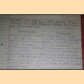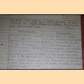Prokaryotes have a chemically complex cell wall. Eukaryotes may also have a cell wall, but it is simpler — for example, cellulose in plants and chitin in fungi. Prokaryote cell walls are chemically complex, whereas eukaryote cell walls are simpler and vary by organism type.